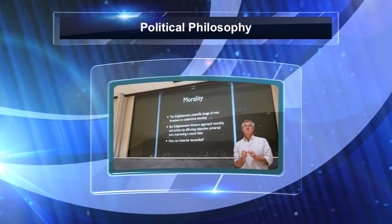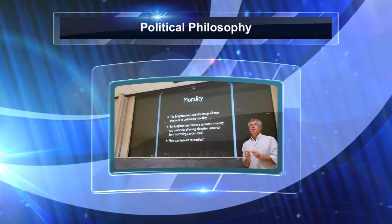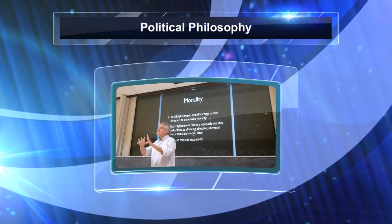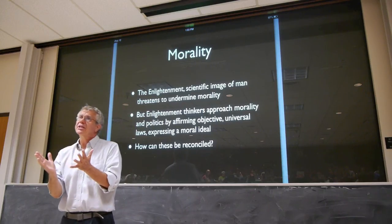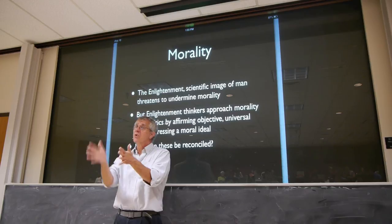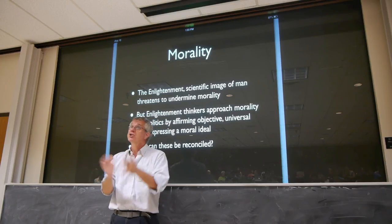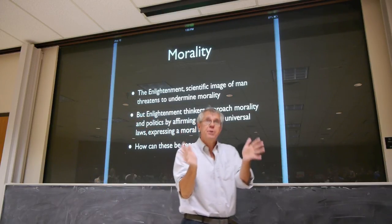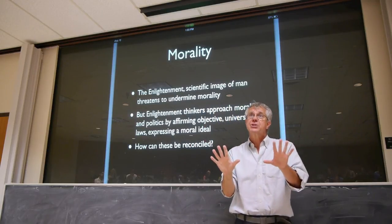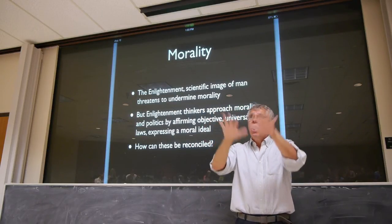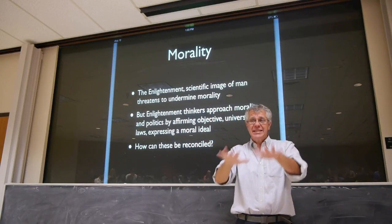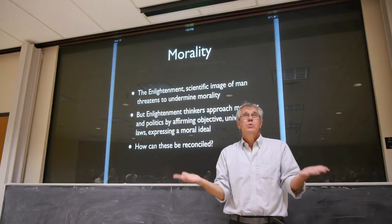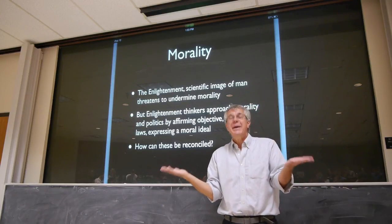Let's turn back to the basic problem of the Enlightenment: this picture of a scientific conception of the world, a scientific conception that doesn't by itself make any room for ought or should or just or unjust. The question is then how those would be understood in terms of that scientific picture. Are they something in addition? Are they in some way disguised ways of describing the world? Are they things that don't, in their own terms, make any sense at all?